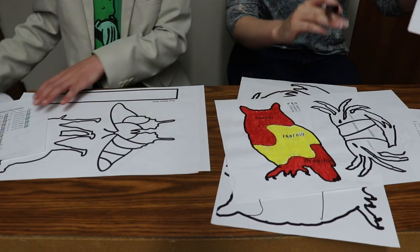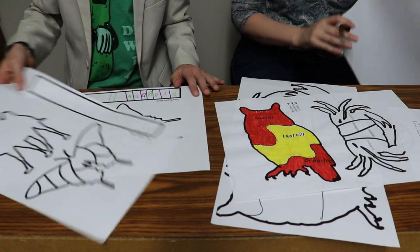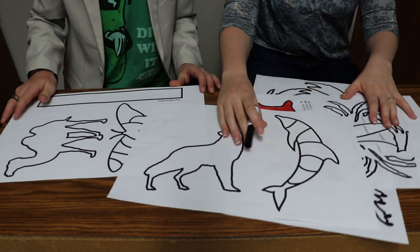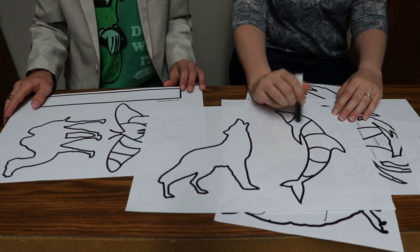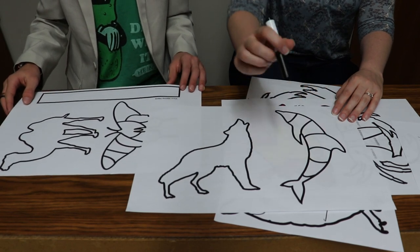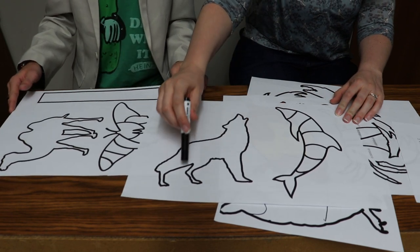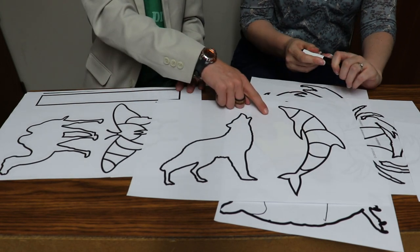And then the next one you guys have is you get a wolf and your dolphin. And we sectioned off the dolphin for you so you don't need to worry about it, it's like nine letters. Yeah, it's a lot of letters. But the wolf is just four so you'll want to divide the wolf into four parts.